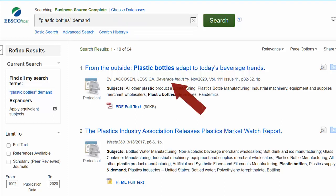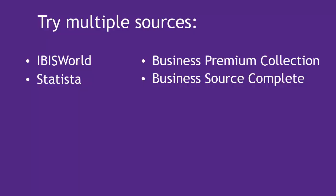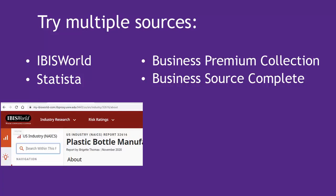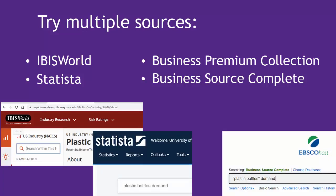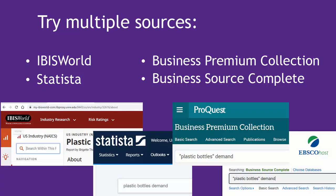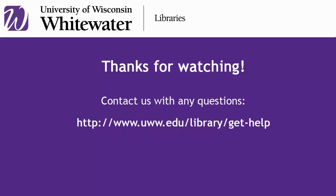Number 1 looks like a relevant article from the trade journal called Beverage Industry. For any assignment asking you to study demand, you may not find one 100% accurate number that matches your specific product and the exact years you want. You'll often need to check lots of different sources, compile various numbers and estimates, look at industry experts' analysis, and draw reasonable conclusions. That's just part of business research. However, if you're feeling frustrated or stuck, don't hesitate to contact the library. We're happy to help!